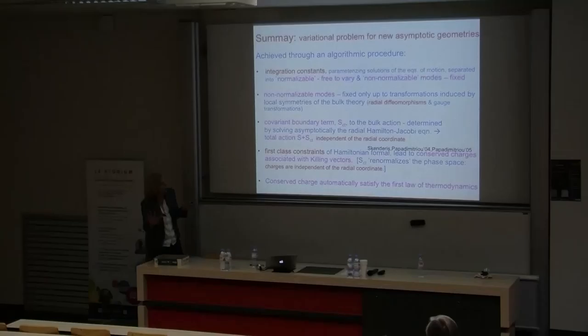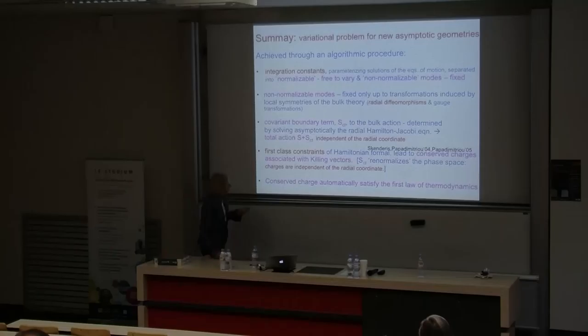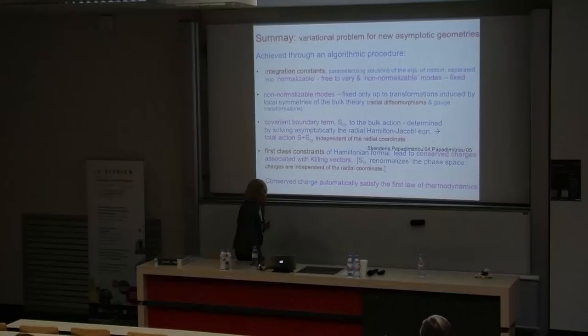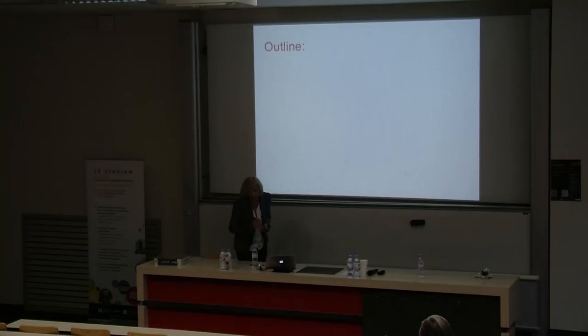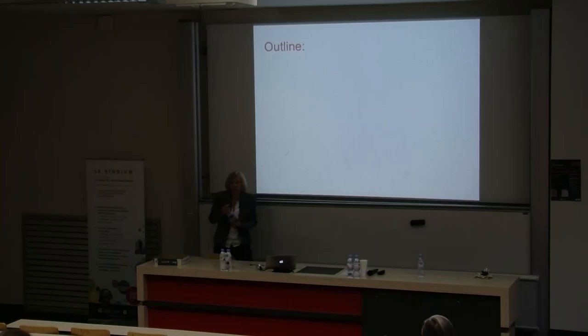The key point is really identifying what the non-normalizable modes are, then determining the covariant boundary term by solving Hamilton-Jacobi equations for the asymptotic solutions, and the rest should come out automatically. This is in principle an algorithmic procedure. There are subtleties encountered in this context that, in the end, were resolved and allowed us to properly determine all the conserved charges and corresponding thermodynamics. In a nutshell, those are the key questions and the outcome of the analysis.